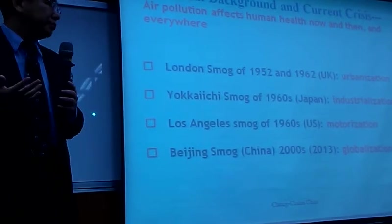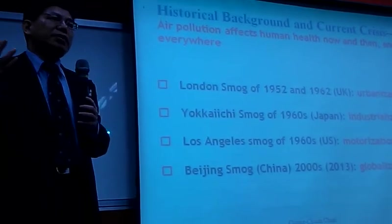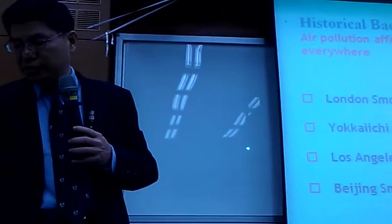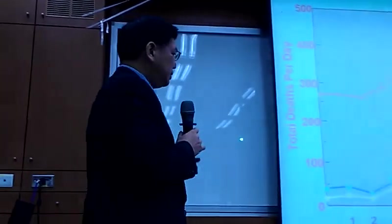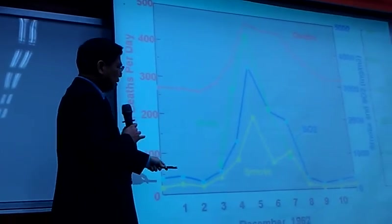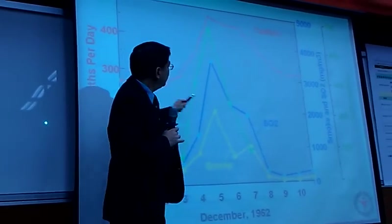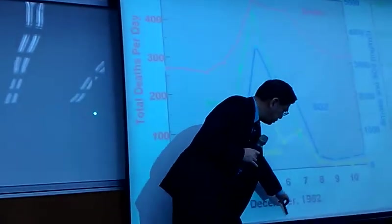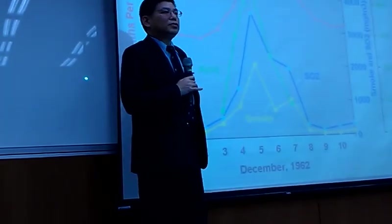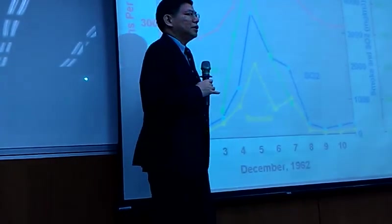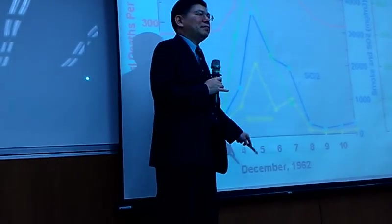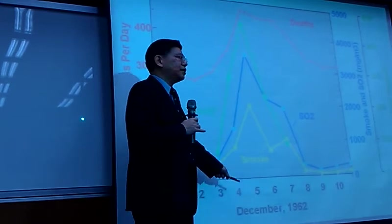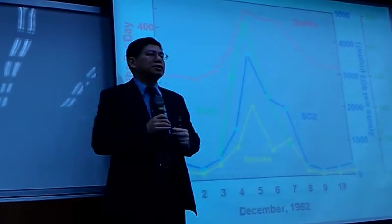Why? Urbanization, industrialization, motorization, and globalization. This is 1962 London — pollution with deaths. You can change it. But in 2011 to 2020, Beijing, and probably next, Bombay and Jakarta, will repeat this human tragedy. Will we allow this to continue in the future?